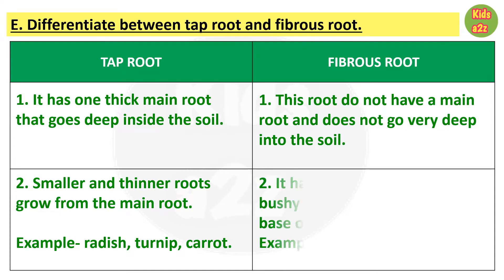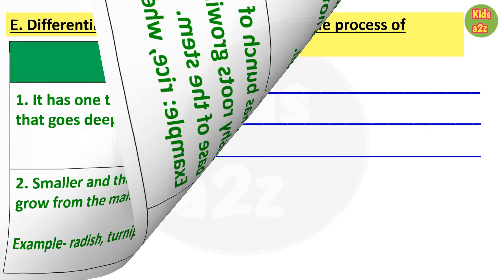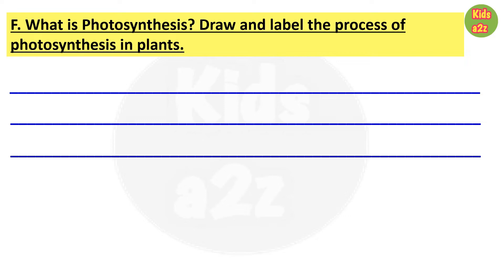Examples of tap roots are radish, turnip, and carrot. For fibrous root, it has a bunch of small and thin bushy roots growing from the base of the stem. Examples are rice, wheat, corn, and grass. Now some descriptive questions and answers. First question: what is photosynthesis?